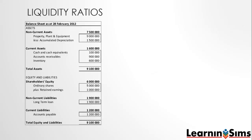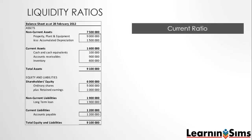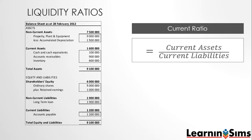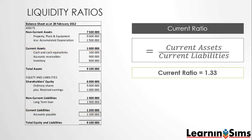We then have the current ratio as another measure of liquidity. It is calculated by dividing the current assets by the company's current liabilities. In this example we have 1.6 million worth of current assets divided by the 1.2 million of current liabilities. This gives us a current ratio of 1.33, meaning that for every dollar of current liabilities we have 1.33 in current assets.